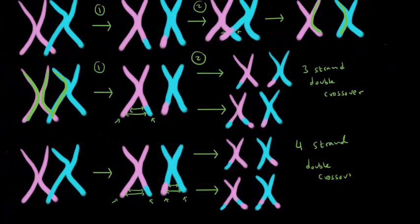In this case we involved all four strands: this strand, this strand, this one, and this one. And again, it was a double crossover because crossing over happened twice. The point of showing all this is to help us understand that crossing over can happen in many, many different ways, in many different places, and a number of times.